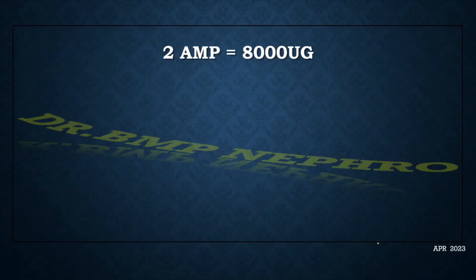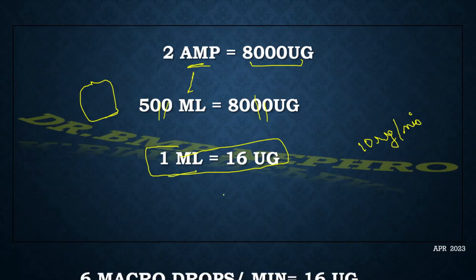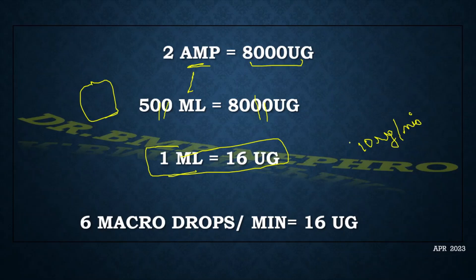Suppose if the infusion set is not there, if we are in a medicine ward where we have to start using the normal saline bottle, then the calculation goes like this. Since 2 ampoules contain 8000 microgram of noradrenaline, we will be putting this in 100ml in this bottle. So 1ml contains 16 microgram. Since the starting dose is 10 microgram per minute, approximately we can start around 1ml per minute.